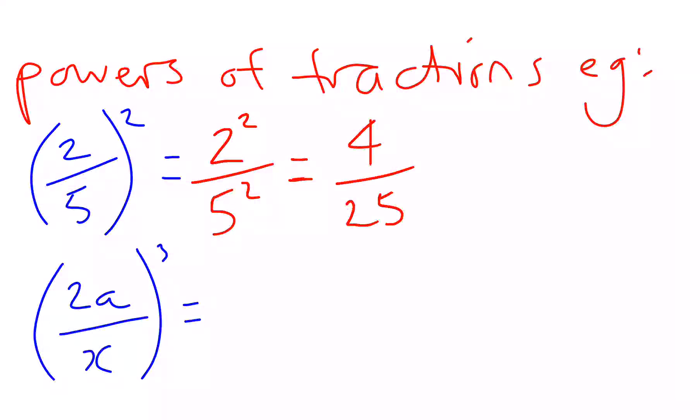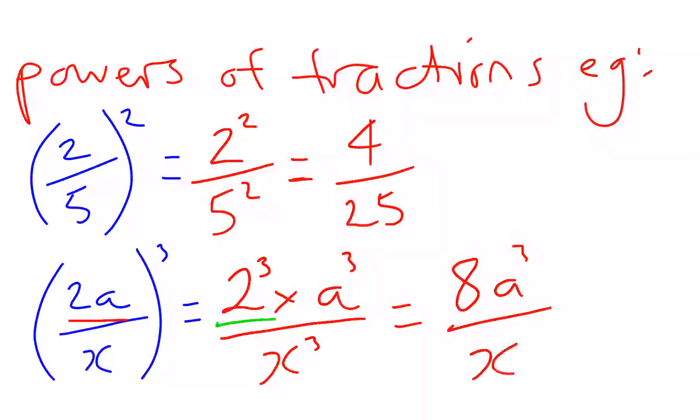The next one has an algebraic fraction, and we're being complicated because we have a product. So we're combining two rules. I'm going to have to raise 2a to the power of 3, remembering that's 2 cubed times a cubed. And then I've got to do x to the power of 3. Because I've got an algebraic term and a coefficient, I can evaluate my coefficient. 2 cubed we know is 8. I've got 8a cubed over x cubed.